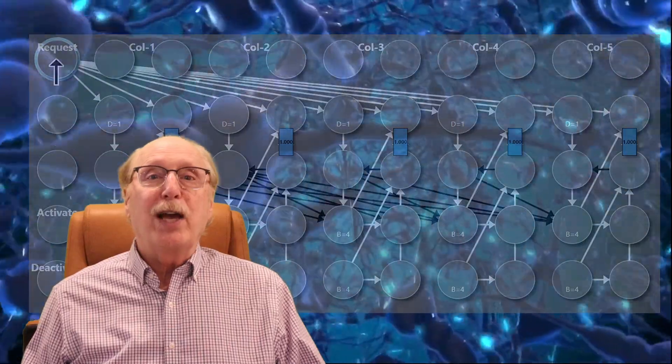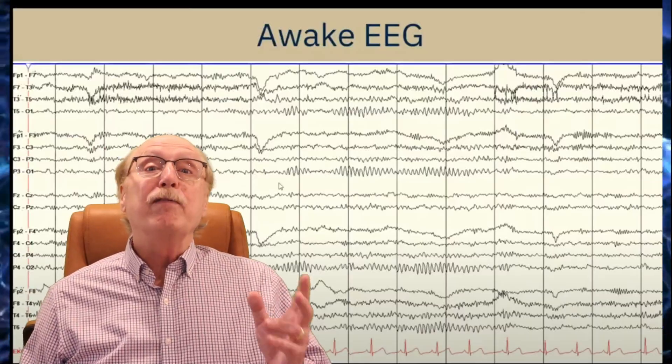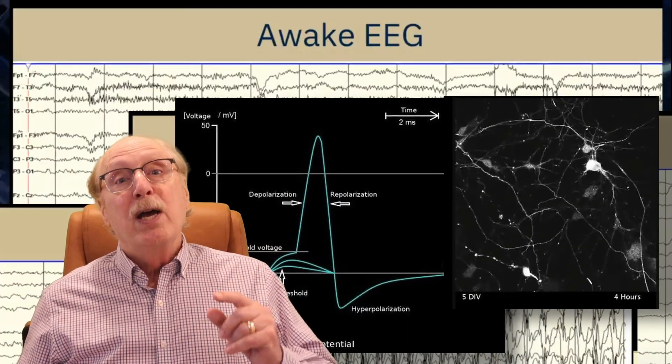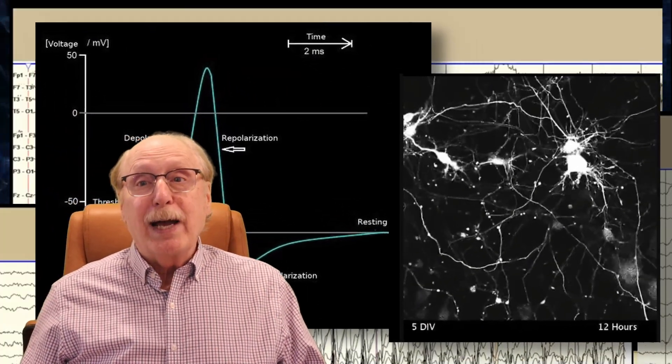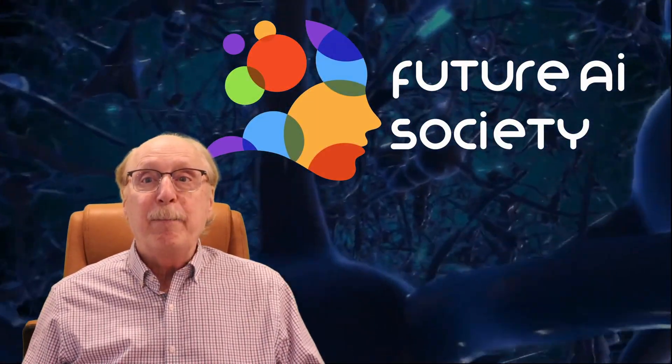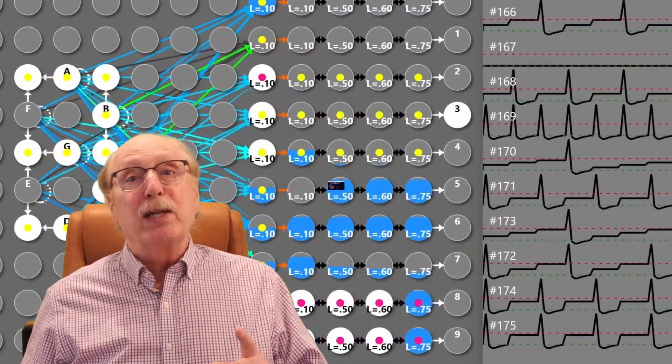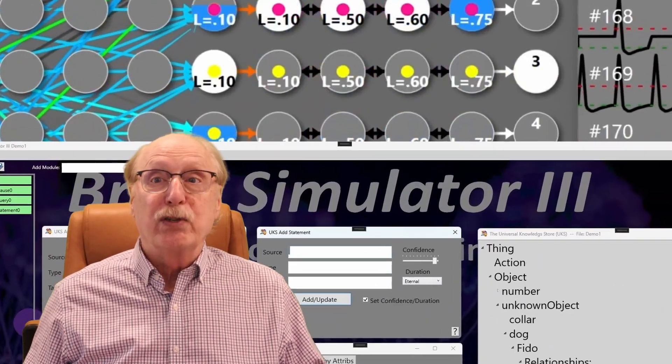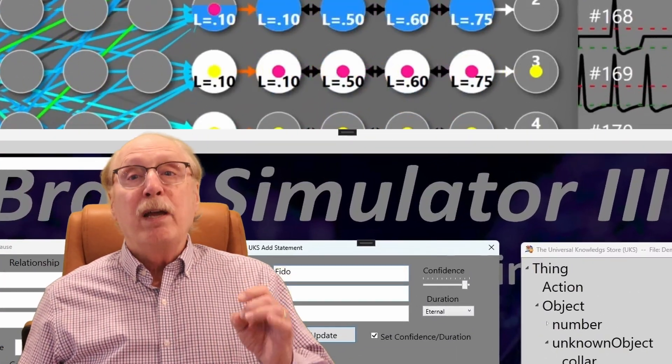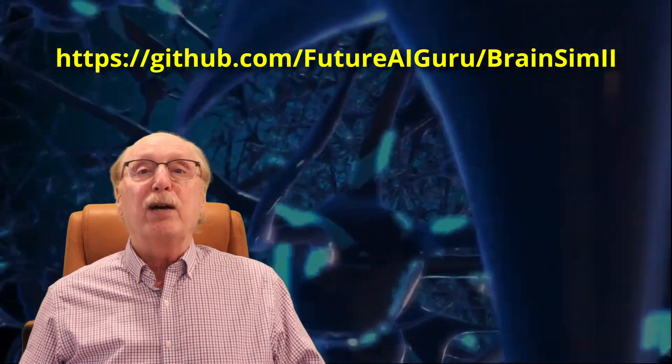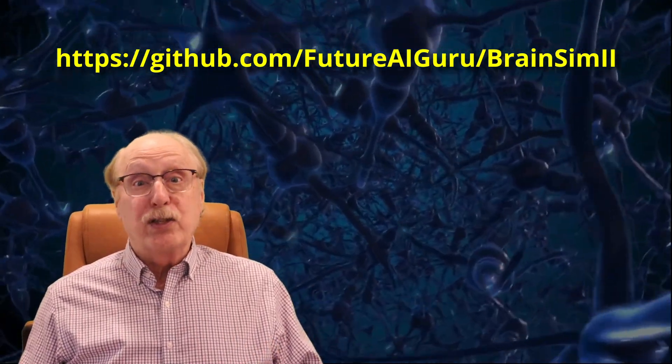I'm Charles Simon, long-time AI researcher, software developer, and manager. Beyond AI, I've developed software for neurological test instruments and neural simulators. I created the Future AI Society to explore how neuroscience can inform smarter, more human-like AI. And I'm using our open-source brain simulator projects for simulations and demonstrations throughout this video series. If you want to experiment on your own, you can download the Brain Simulator 2 from GitHub and try out these neural circuits and suggest improvements.